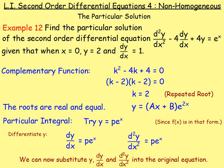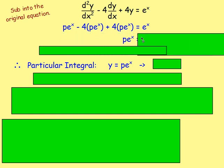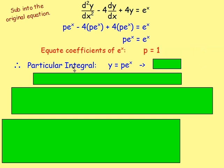Substituting in: d²y/dx² is pe^x, minus 4 times dy/dx which is also pe^x, plus 4 times pe^x equals e^x. Simplifying the left side: p − 4p + 4p = p, so pe^x = e^x. Equating coefficients of e^x, p equals 1. So the particular integral is y = e^x.